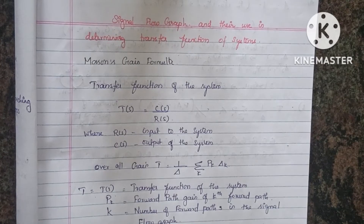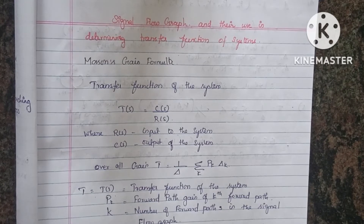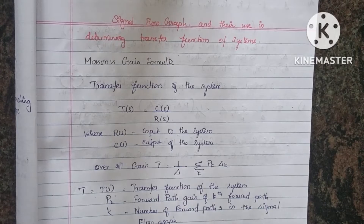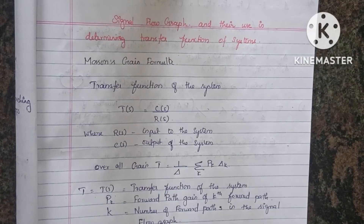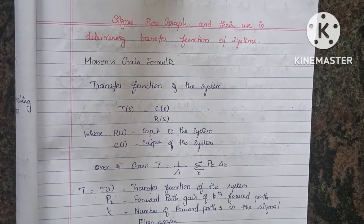This is Mason's gain formula. The Mason's gain formula gives the transfer function of the system. T(s) is equal to C(s) divided by R(s), where T(s) is the transfer function, C(s) is the output of the system, and R(s) is the input of the system.